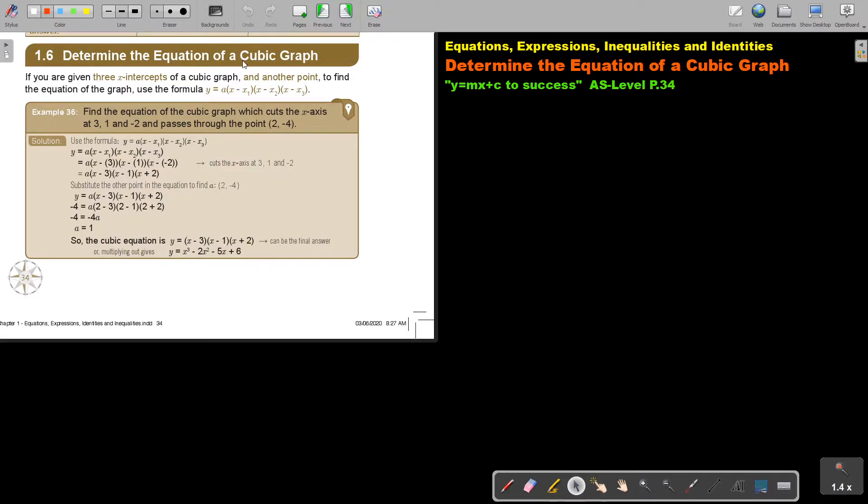Determine the equation of a cubic graph. If you are given three x-intercepts of a cubic graph and another point to find the equation of the graph, use the formula. So it is almost like quadratic, you just have an extra x-intercept now.